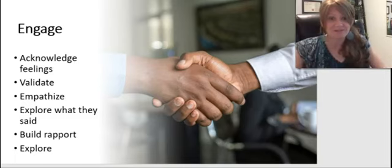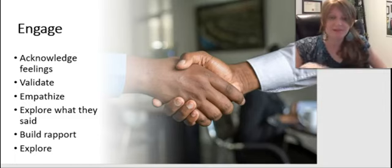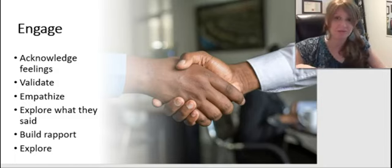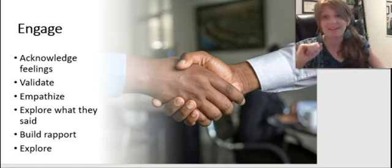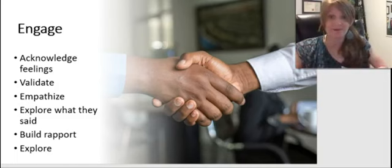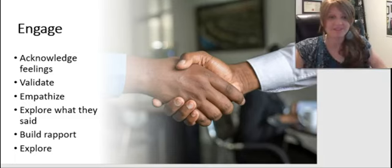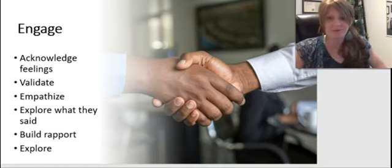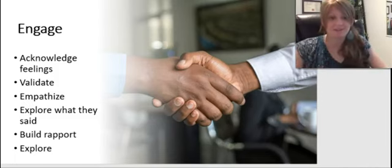Here's what you really need to remember for engagement: the social worker should be getting a feel for the reason that the client is seeking services, setting expectations for the helping relationship like roles, and getting basic information from the client — remembering that client participation is key. This should be a collaborative process, and we want to know what their perspective is. This step involves establishing rapport and building a trusting relationship, with active listening, empathy, and creating a safe space for clients to express themselves.